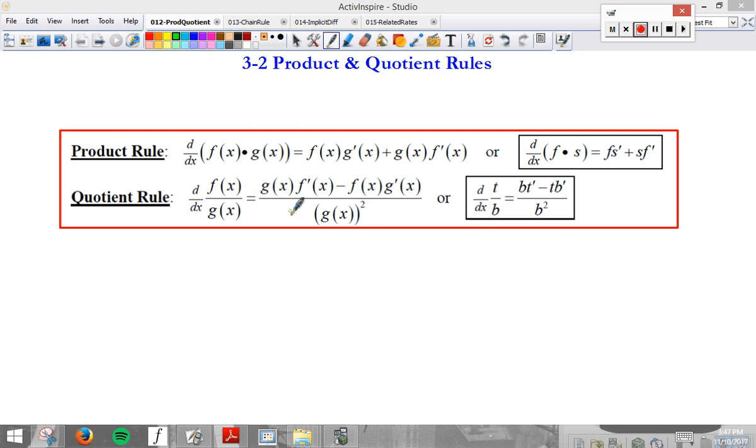So when we're taking the derivative of two functions being multiplied together, we will use the first function, f, times the derivative of g, plus the second function, g, times the derivative of the first function, f. That's what f and s here stand for. First, times the derivative of the second, plus the second, times the derivative of the first. Just a really important rule to memorize here.